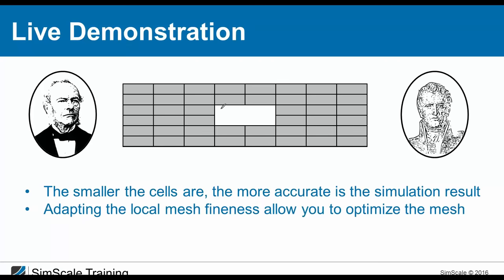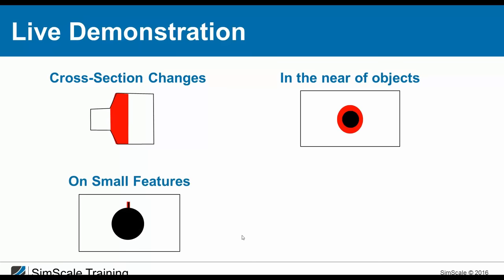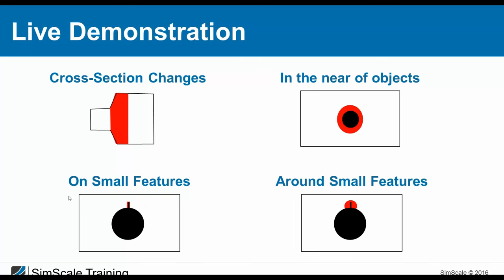By adapting local mesh refinement, you can optimize the mesh and your simulation results. For example, in areas far from the body where flow variables barely change, you can use a coarse mesh. Near the body, where pressure and other quantities change significantly, it's smart to use a finer mesh. There are many regions where mesh refinement is important: cross-sections, near objects, and around small features.